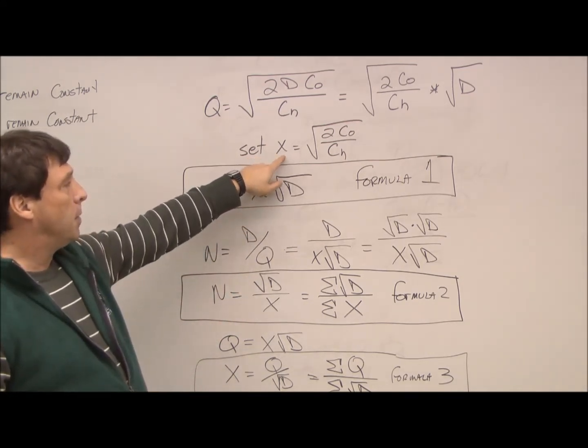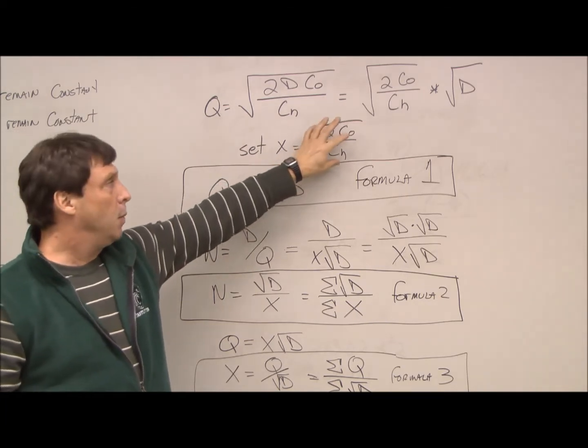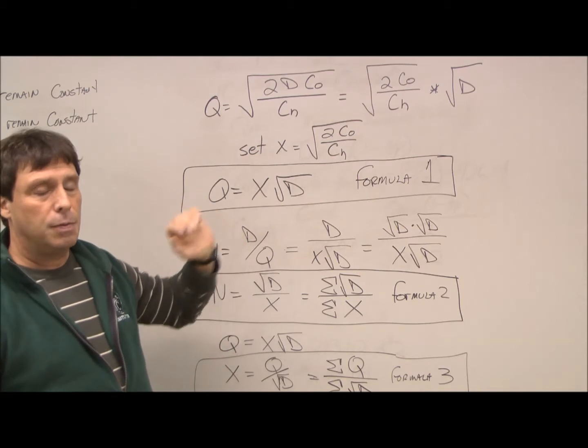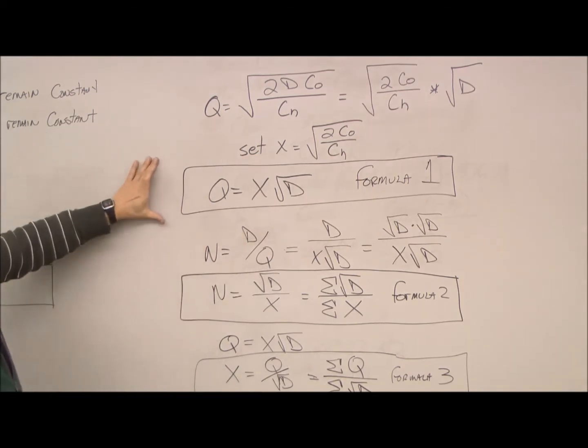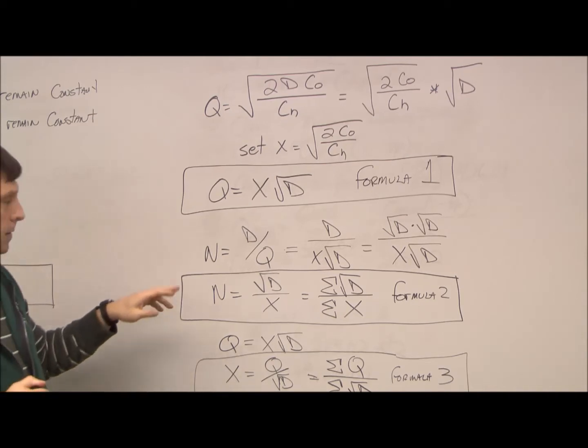So what we can do is arbitrarily set the variable X equal to half this equation. We don't have this information, so we're just going to call it X. So we change our formula to Q equals X times the square root of D, that's formula one. We do another mathematical trick to figure this out.